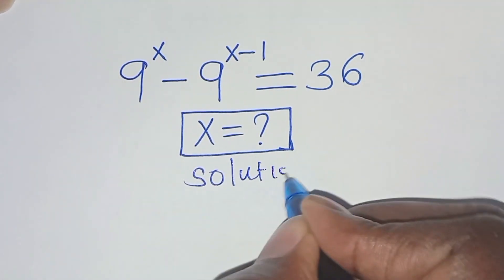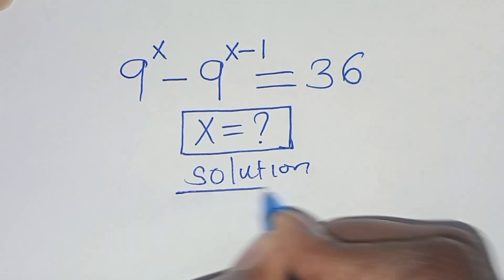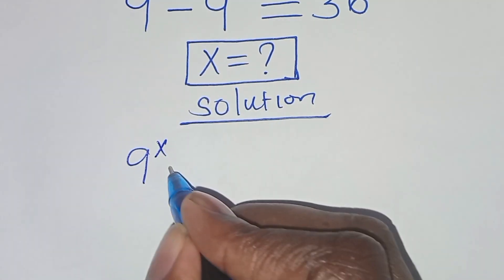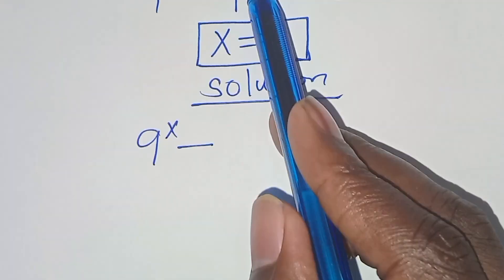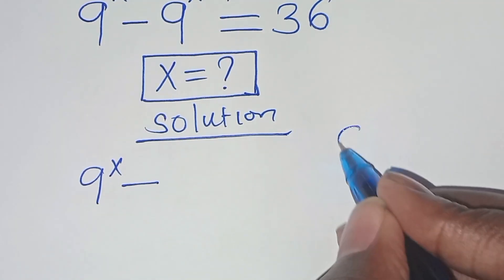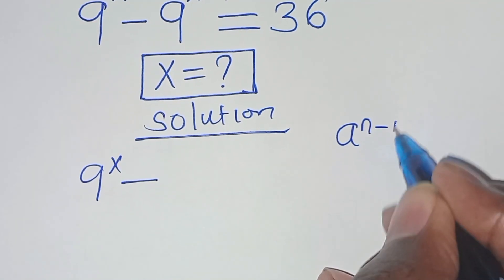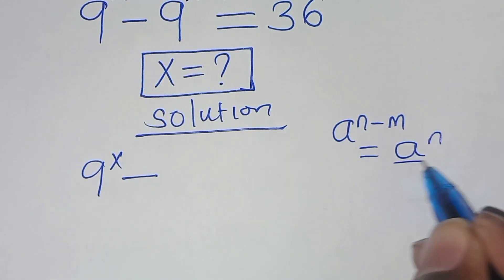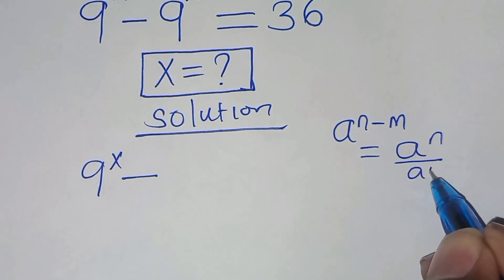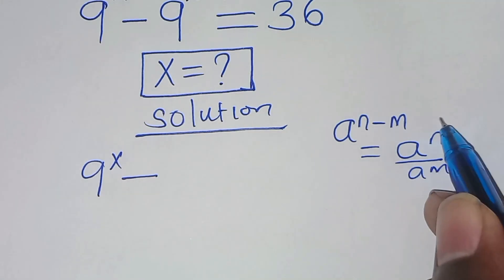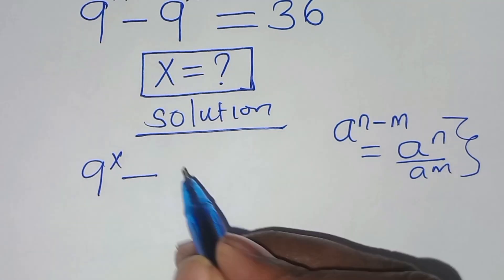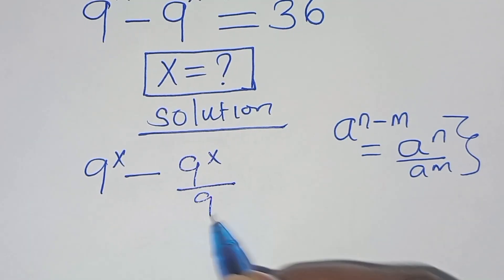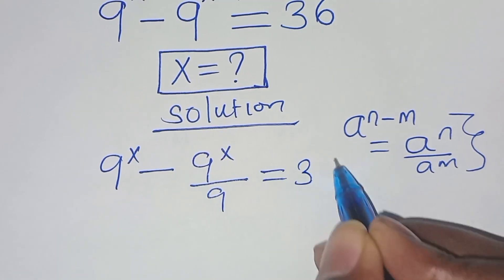Now, from the solution, we have 9 to power x subtract 9 to power x minus 1. This is in the form of a to power n minus m, which we can express as a to power n over a to power m. Applying this exponent property, then here we have 9 to power x over 9. This is equal to 36.